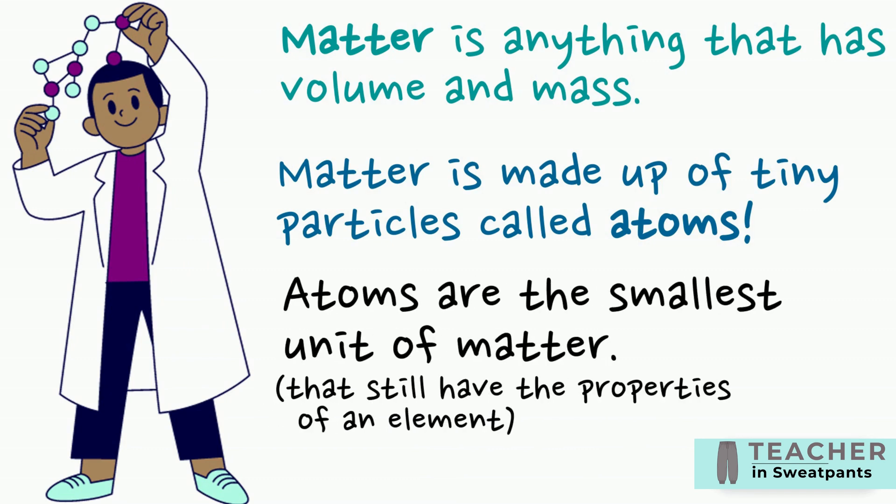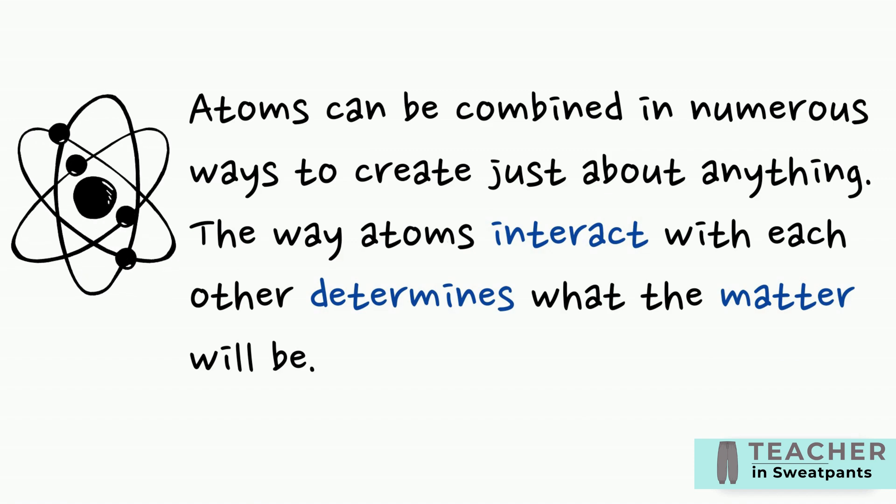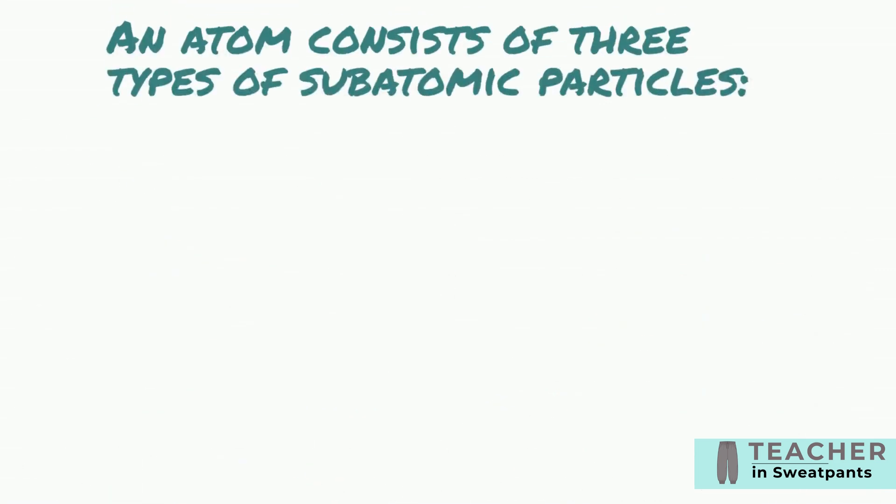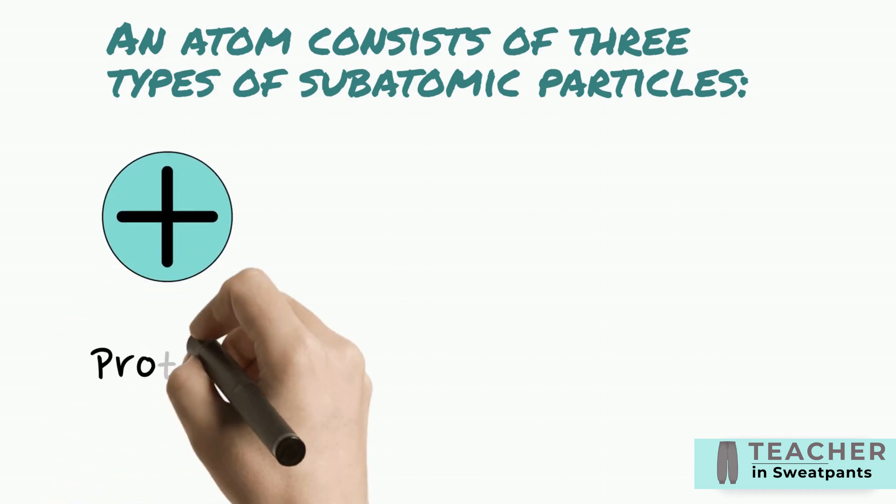Atoms are the smallest unit of matter that still have the properties of an element. Atoms can be combined in numerous ways to create just about anything. The way atoms interact with each other determines what the matter will be. An atom consists of three types of subatomic particles.